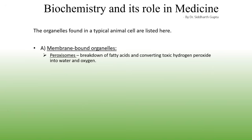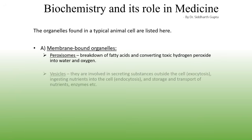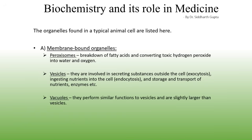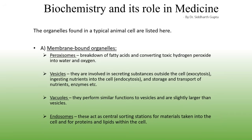The peroxisomes break down fatty acids and convert toxic hydrogen peroxide into water and oxygen. The vesicles are involved in secreting substances outside the cell — a process called exocytosis — or ingesting nutrients into the cell — called endocytosis — as well as storage and transport of nutrients and enzymes. The vacuoles perform similar functions to vesicles and are slightly larger. The endosomes act as central sorting stations for materials taken into the cell and for proteins and lipids within the cell.